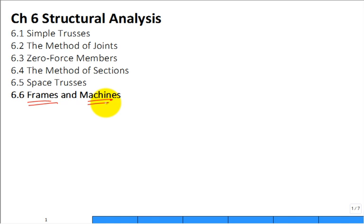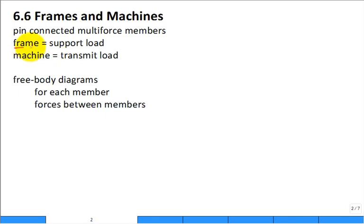For introductory purposes, I wouldn't over-analyze the distinction between a frame and a machine. A frame supports a load — that's what it does, holds it up. A machine transmits or transforms a load: I apply a force here, and the machine puts out another force, magnifying or decreasing it, somewhere else.